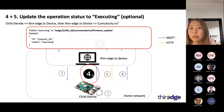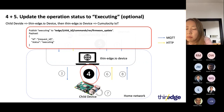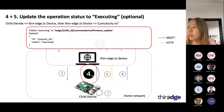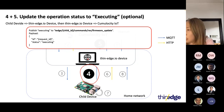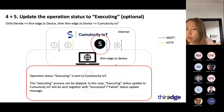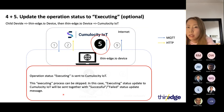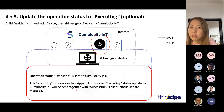Step four: the child device now knows all necessary information to proceed with the firmware update request. Steps four and five are about updating the operation status to executing. The child device should report via MQTT that it is now executing the request, and the thin-edge device converts the message to the Cumulocity format as Smartrest, so the operation status in Cumulocity changes to executing. Note: this step is actually optional — if you skip it, the executing status update to Cumulocity will be sent together with the successful or failed status update message at steps eight and nine.